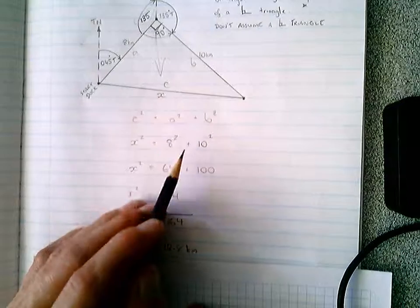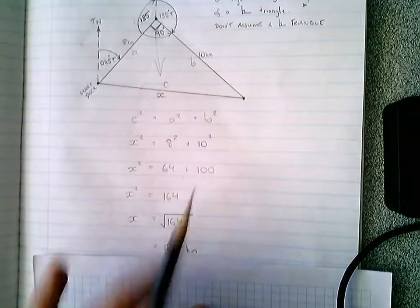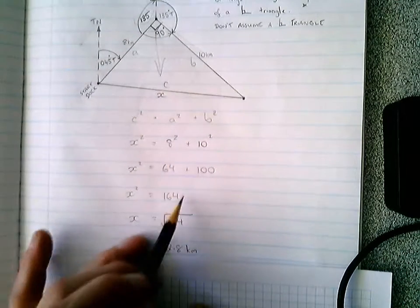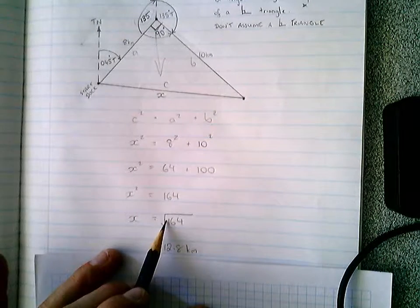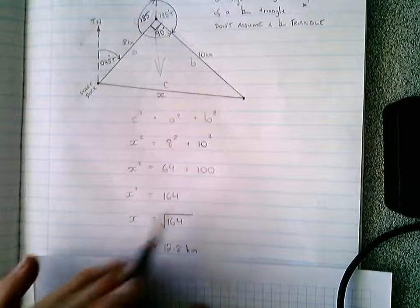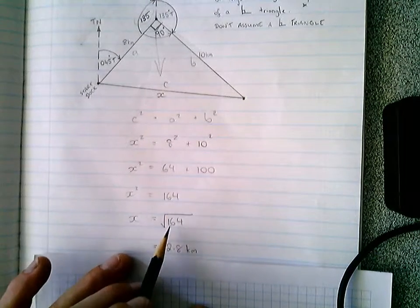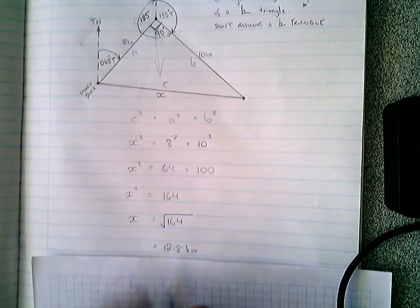So I've said 8 squared plus 10 squared is 64 plus 100, gives us 164 as an x squared value. To get x by itself, I have to take the square root of the other side, so x is therefore equal to the square root of 164, which gives us this 12.8 kilometers.